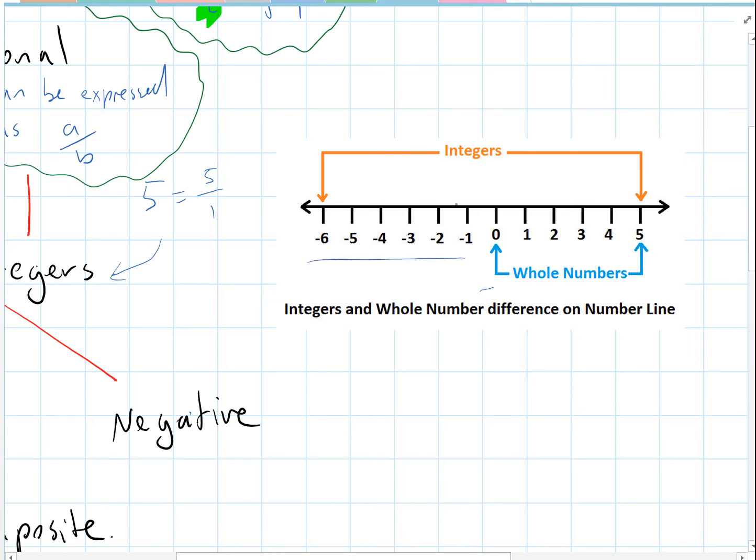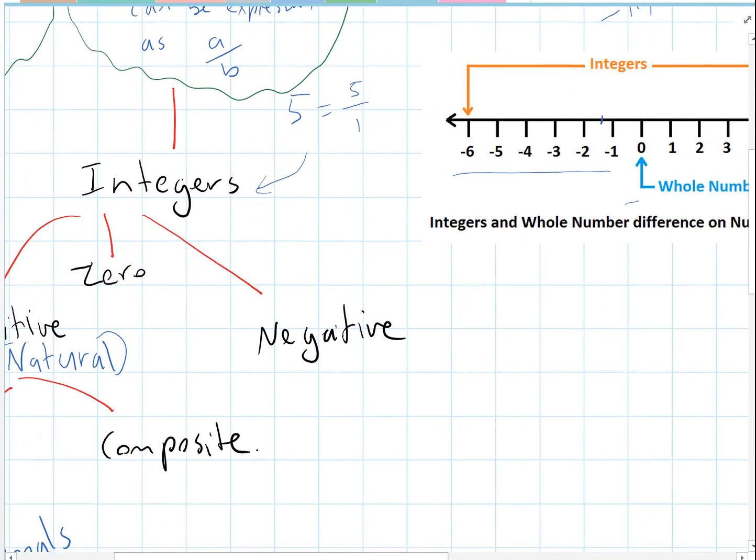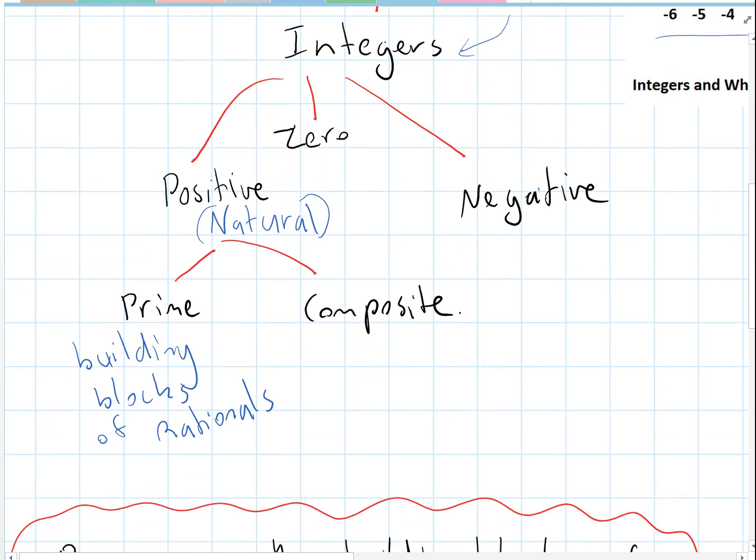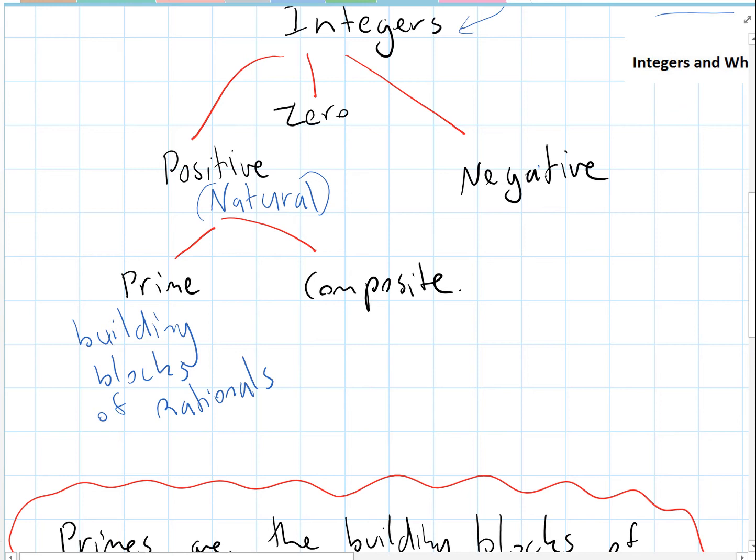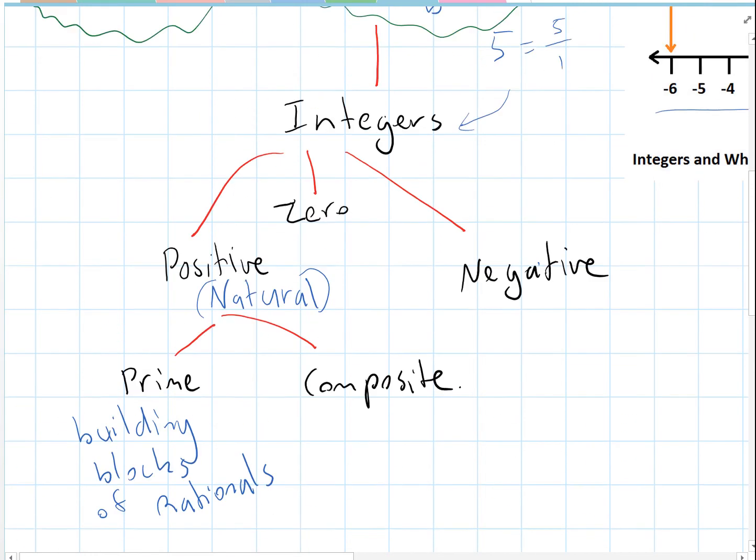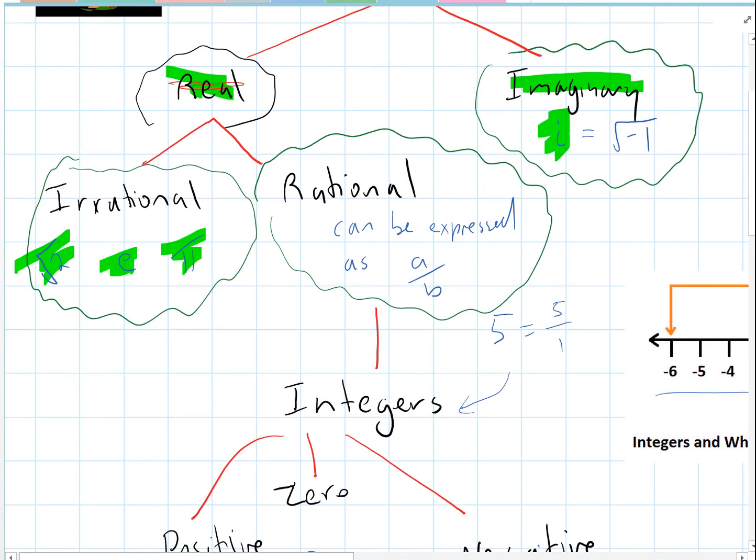You can have negative fractions because you can be in between there. You could be about minus 1.4. So we've got integers, and here we go - zero, we've got the positive numbers which are the natural numbers and the negative numbers. Within the positive natural numbers we've got primes and composites. Now the primes - the key about the primes is they are the building blocks of all the rational numbers. So all these rational numbers here can be built up by combinations of primes, and that's what we've been looking at.